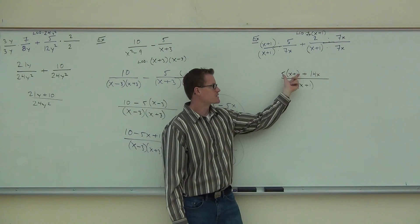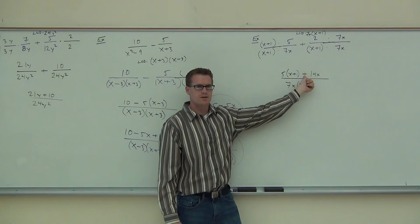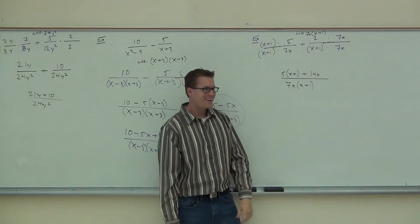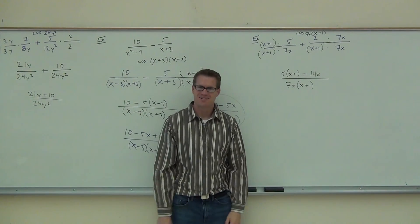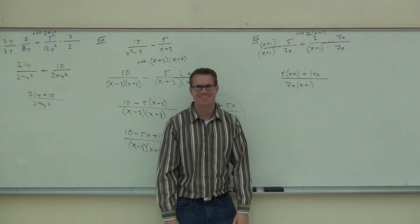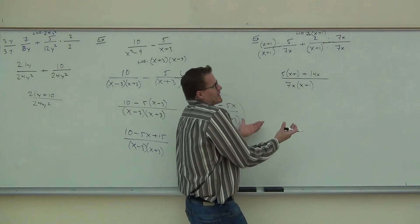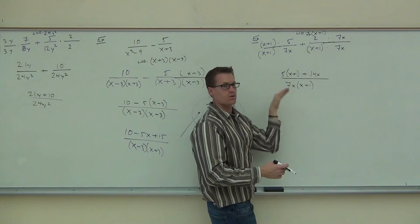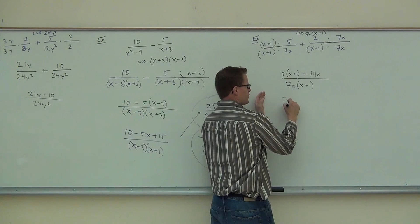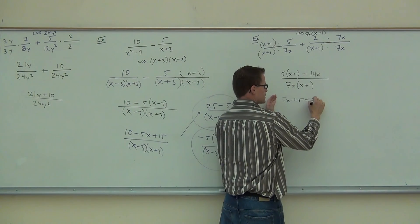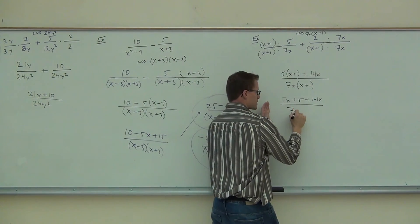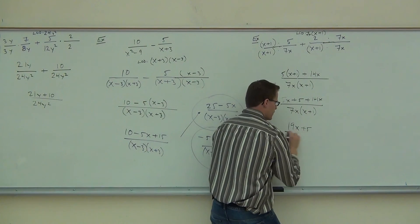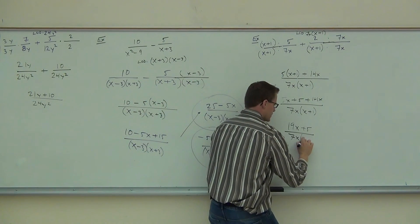Can I simplify those? No—notice that's connected by addition. This is one of the biggest mistakes in calculus. You cannot cross out terms connected by addition—these are a term and a term. What you can do is distribute: 5x plus 5 plus 14x, and leave the denominator as 7x times x plus 1. Combining like terms gives 19x plus 5 over 7x times x plus 1.